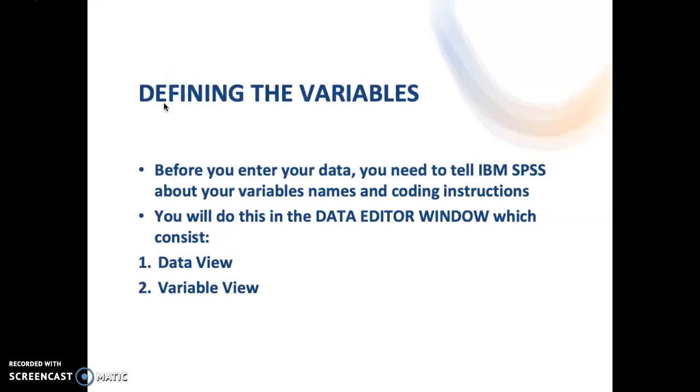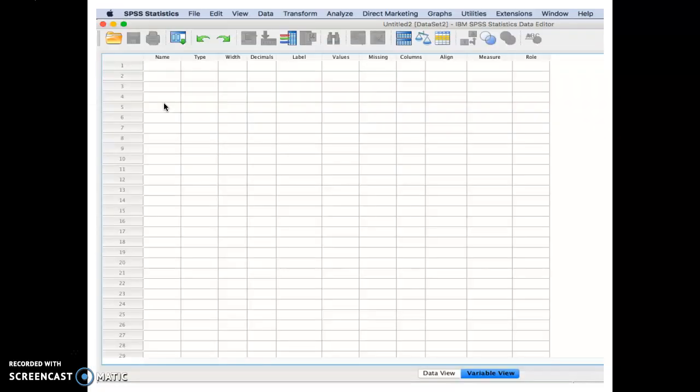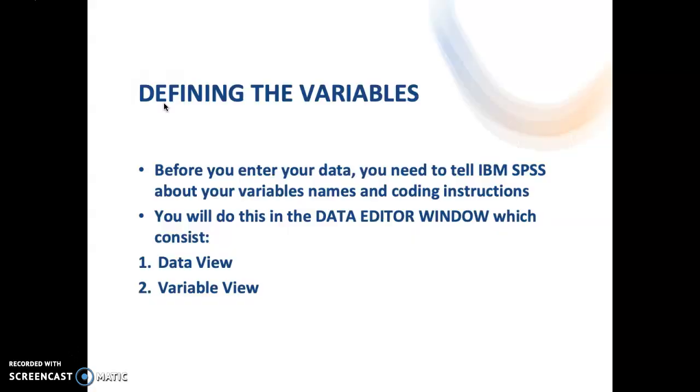So how do we define the variables? So before you enter your data, you need to tell IBM SPSS about your variable's name and coding instructions. So you will do this in the data editor window, which consists of data view as well as variable view. Just like what I showed you earlier, in this window, you can see a data view as well as variable view after you open the SPSS software.